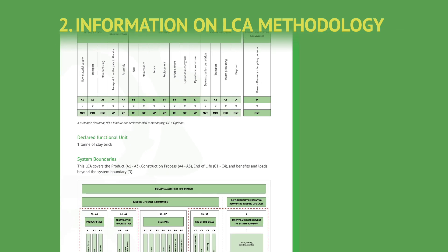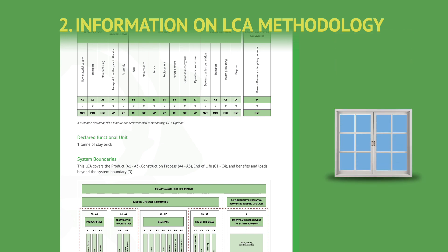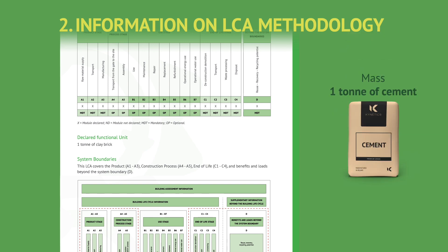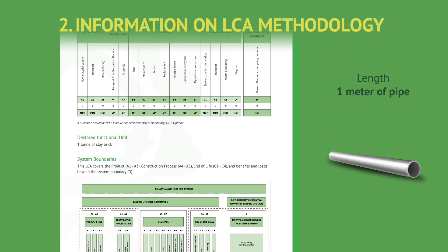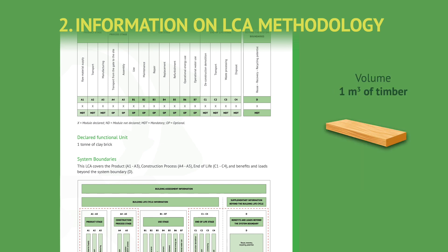In this section, you will also find the declared unit. This unit is crucial, as it represents the basis for expressing the impact results presented in the EPD, and provides a standardised reference point for comparison and analysis. The declared unit specifies the quantity or measure for which the impact results are expressed. It can be expressed per item or assemblage of items — for example, one window; mass — for example, one tonne of cement; length — for example, one metre of pipe; area — for example, one square metre of roof elements; or volume — for example, one cubic metre of timber.